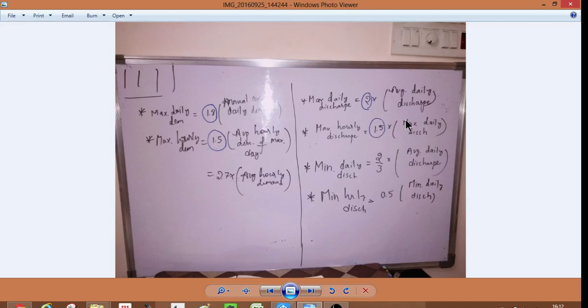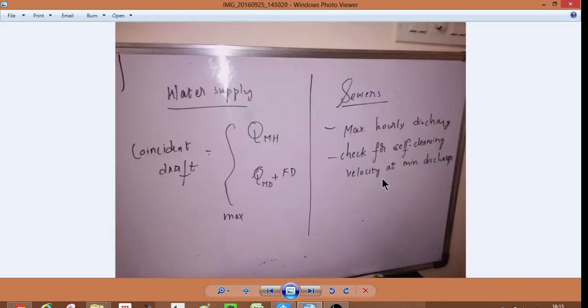Minimum hourly discharge is 1.5 to minimum daily discharge. In hours there is always the corresponding max-max-max in min. So you have to notice that for water supply